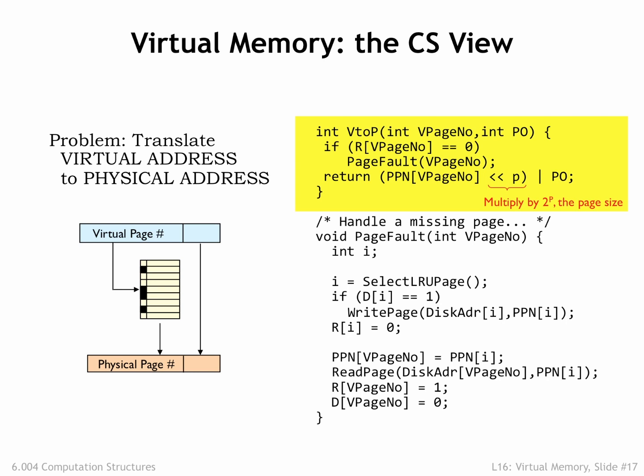The V2P procedure is invoked on each memory access to translate the virtual address into a physical address. If the requested virtual page is not resident, the page fault procedure is invoked to make the page resident. Once the requested page is resident, the VPN is used as an index to look up the corresponding PPN, which is then concatenated with the page offset to form the physical address.